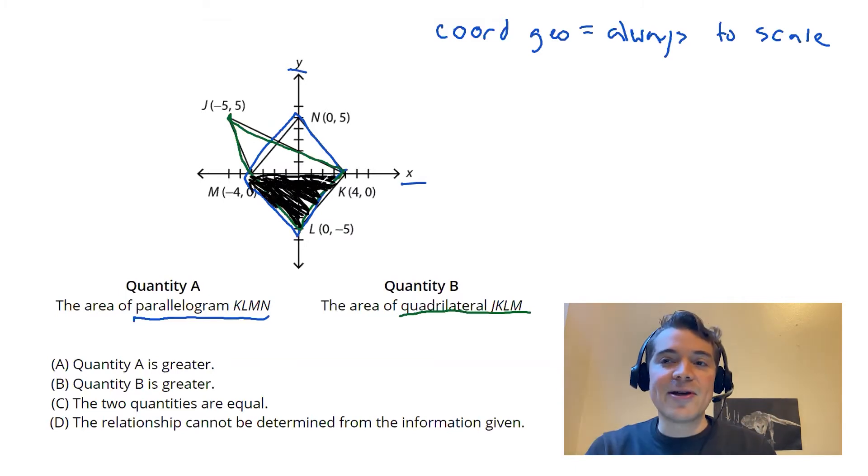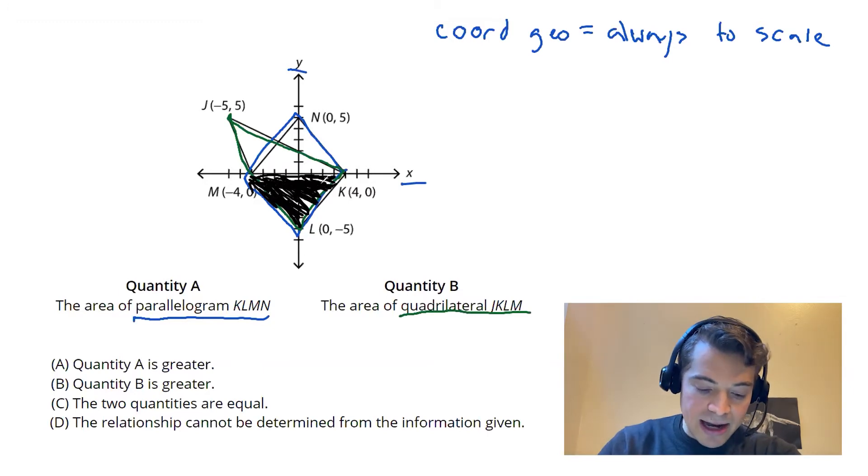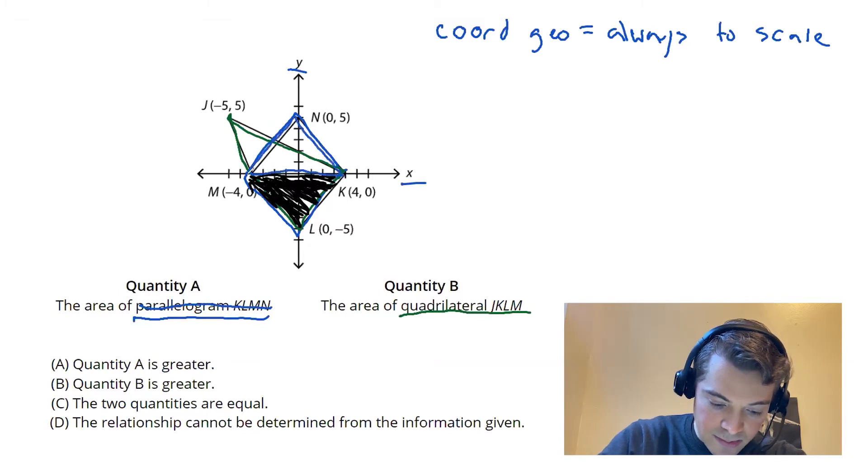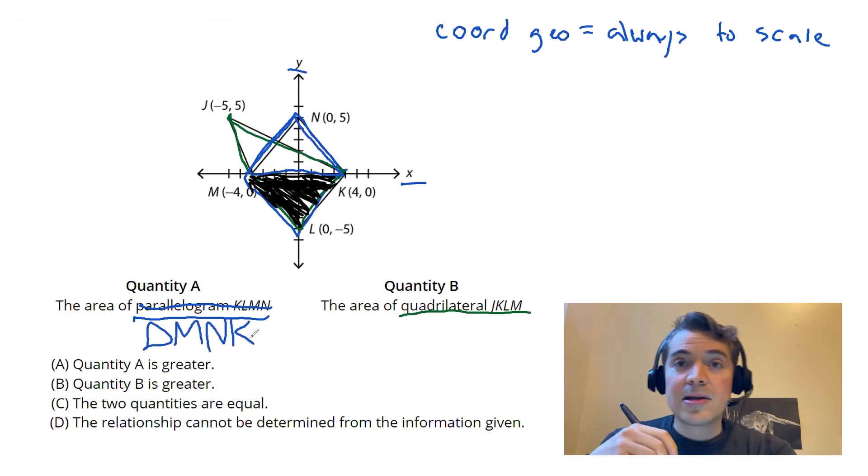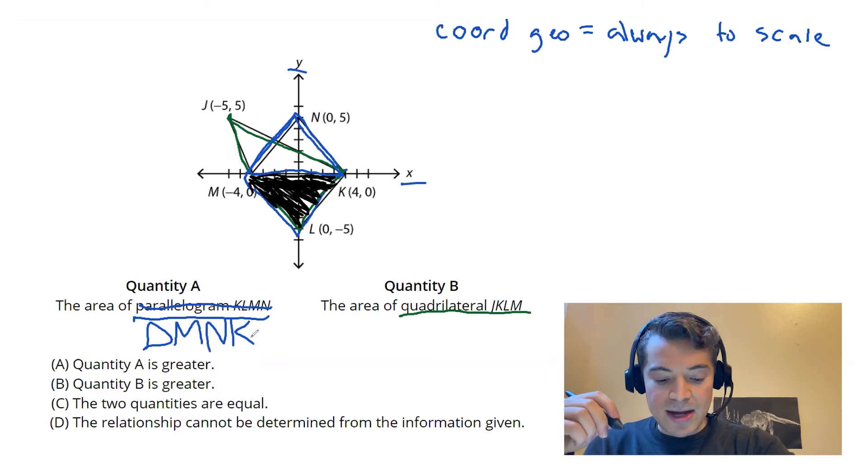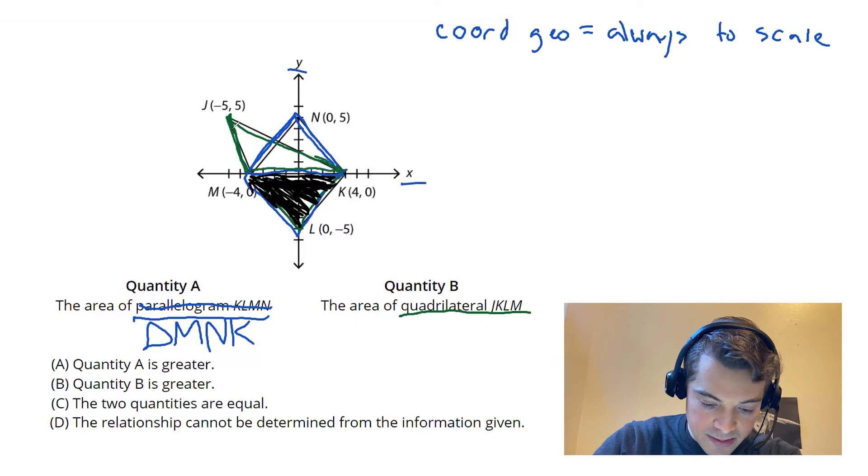And instead I'm going to kind of rephrase my goal here. So instead of thinking about parallelogram K-L-M-N, all I really need to concern myself with is the triangle above the x-axis. So that's triangle M-N-K. Likewise for quantity B, instead of thinking about the entire quadrilateral J-K-L-M, I'm just going to think about that green triangle up there, triangle J-K-M.